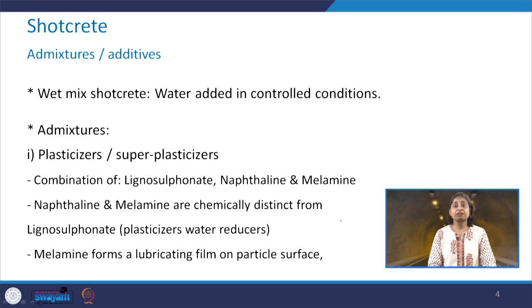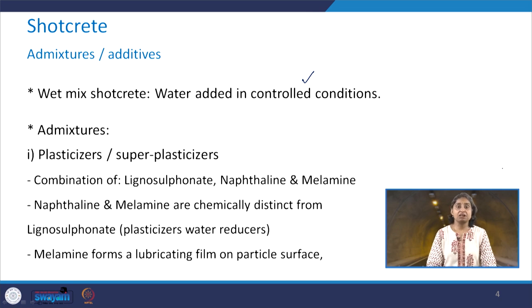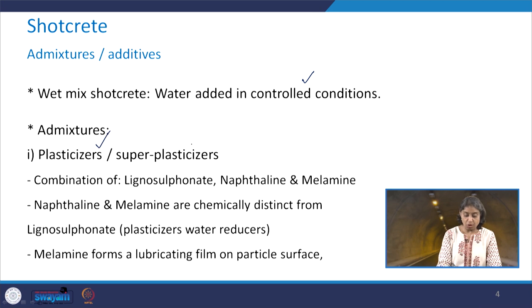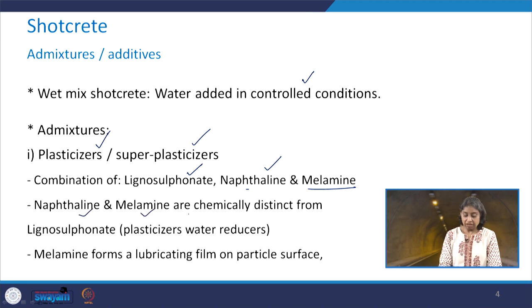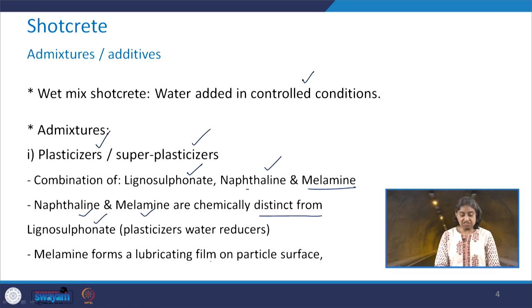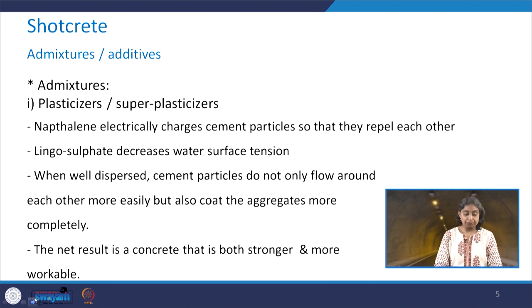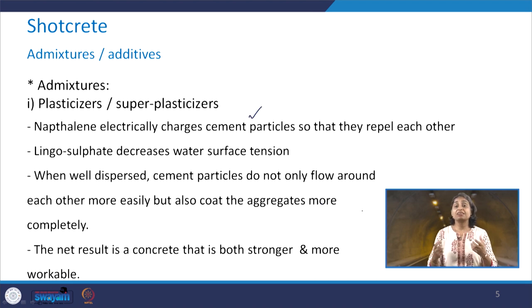For wet mix shotcrete, water is added in controlled conditions. The first admixture category is plasticizers or super plasticizers — these are a combination of lignosulfonate, naphthalene, and melamine. Naphthalene and melamine are chemically distinct from lignosulfonate, which acts as a plasticizer and water reducer. Melamine forms a lubricating film on the particle surface, and naphthalene electrically charges the cement particles so that they repel each other.